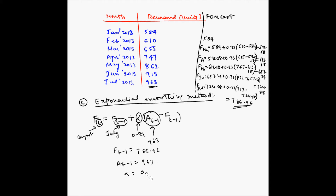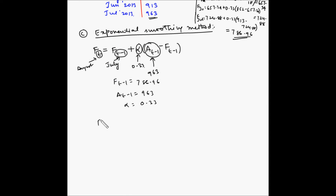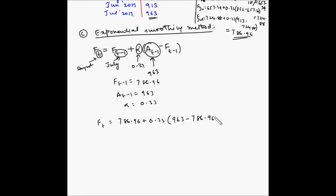With alpha = 0.33, F(July) = 786.96, and A(July) = 963, the forecast for August is: 786.96 + 0.33 × (963 - 786.96) = 845.05 units. This is the forecast for August 2013 using the exponential smoothing method.